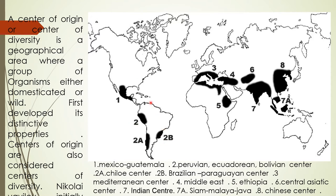In a particular geographical area, the centers of origin or centers of diversity is a geographical area where a group of organisms, either domesticated or wild, first developed its distinctive properties. The centers of origin are also considered centers of diversity.